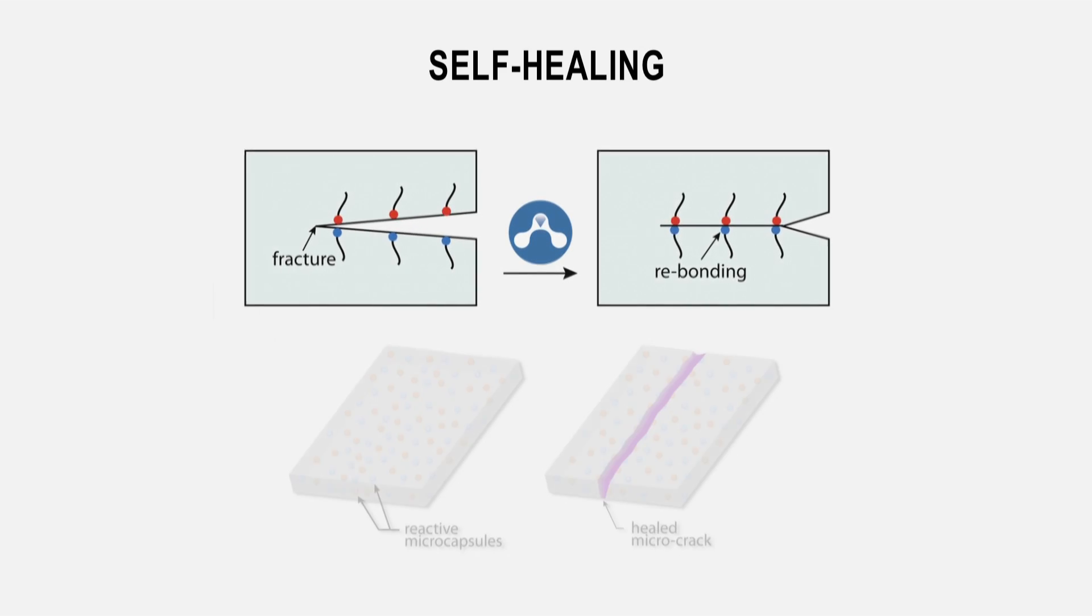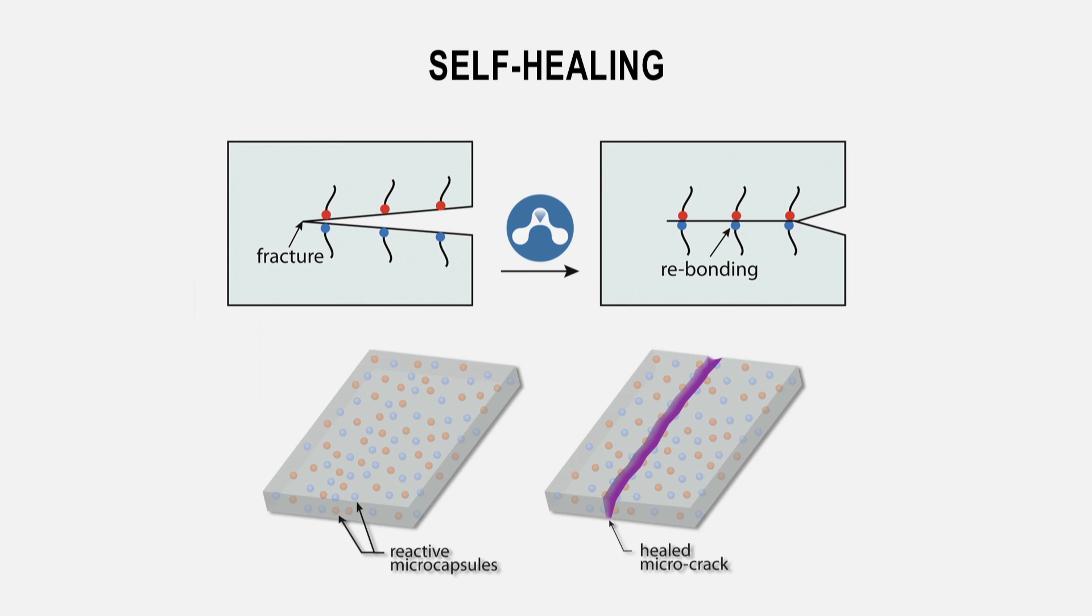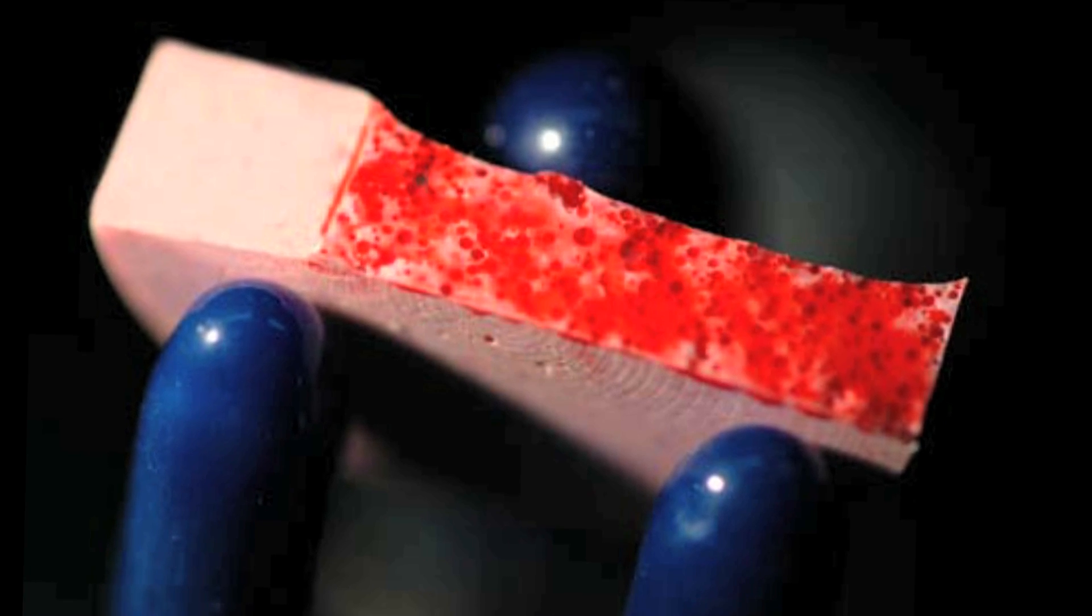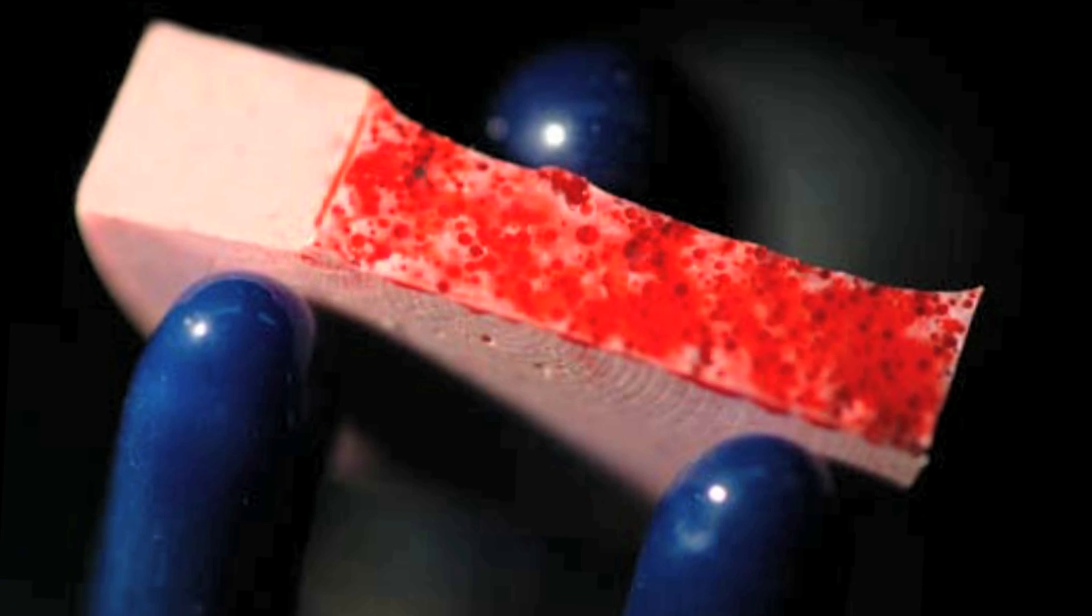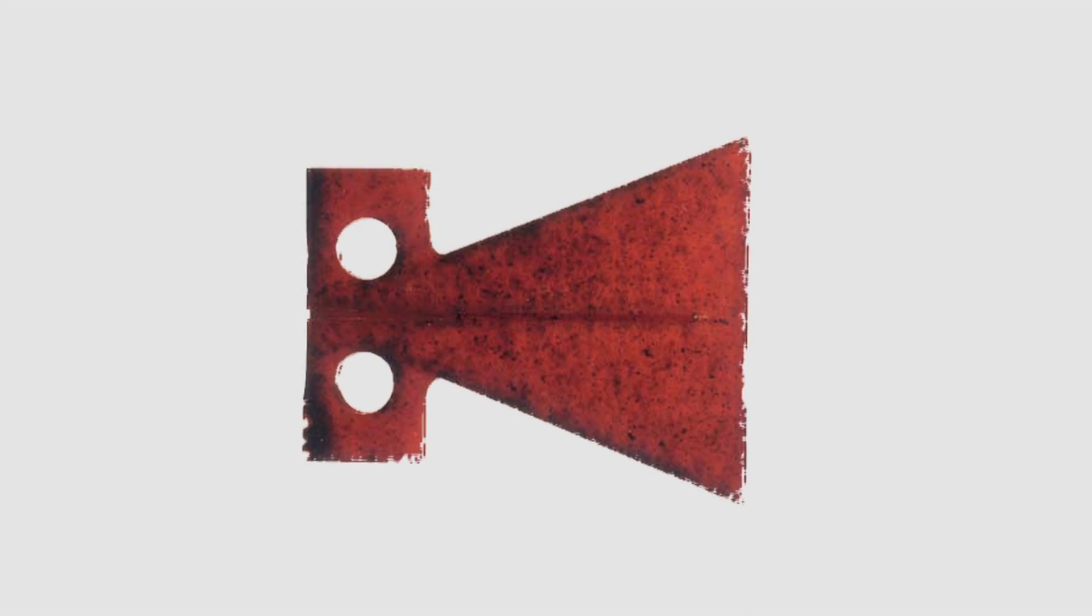The liquid that's in the microcapsule is ruptured by damage, and the liquid will travel by capillary action into the crack plane. The damage exposes both the catalyst and ruptures and releases the contents in the microcapsules, and eventually forms a solid polymer that will rebond the interfaces of that crack back together.